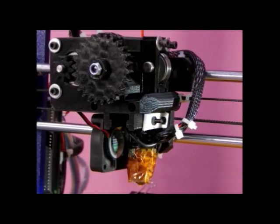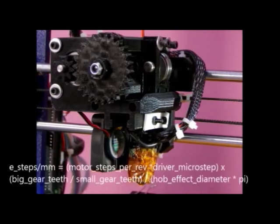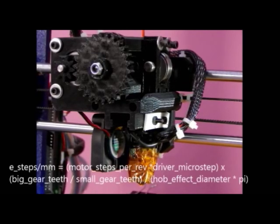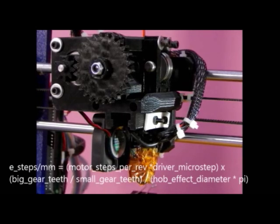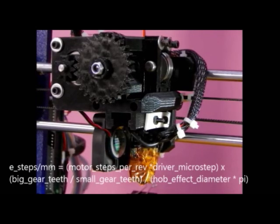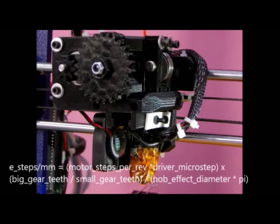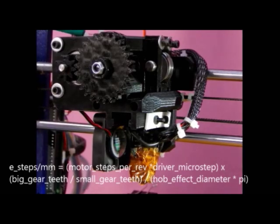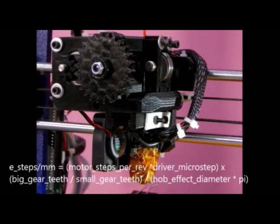Let's begin with the calibration process. The formula for calibration is E-steps per mm equals motor steps per revolution, that is 200 for this Nema 17 motor, multiplied by driver microstep, that is 16.